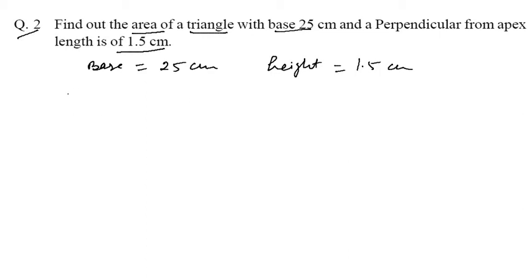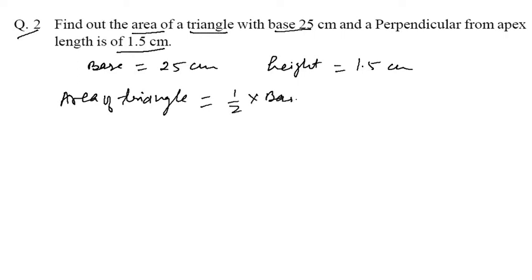Area of a triangle is 1 by 2 into base into height. Put in the values: 1 by 2 into 25 into 1.5. Multiply 25 into 1.5.